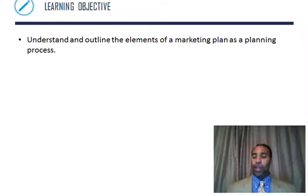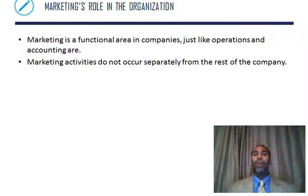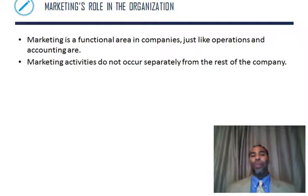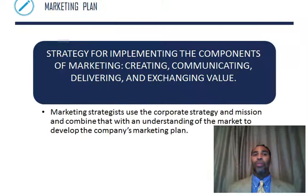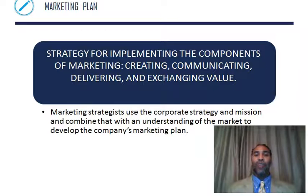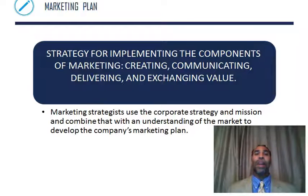Learning objective for the last section: understand and outline the elements of a marketing plan as a planning process. Marketing's role in the organization: marketing is a functional area in companies just like operations and accounting. Marketing activities do not occur separately from the rest of the company — even if you have a marketing department, marketing touches product design, sales, promotion, and mostly all portions of the company. The marketing plan is the strategy for implementing the components of marketing: creating, communicating, delivering, and exchanging value, which replaces price, product, place, and promotion. Marketing strategists use the corporate strategy, mission, and an understanding of the market to develop the company's marketing plan. Once I know what your mission and vision is, I can create my marketing plan and set it accordingly.